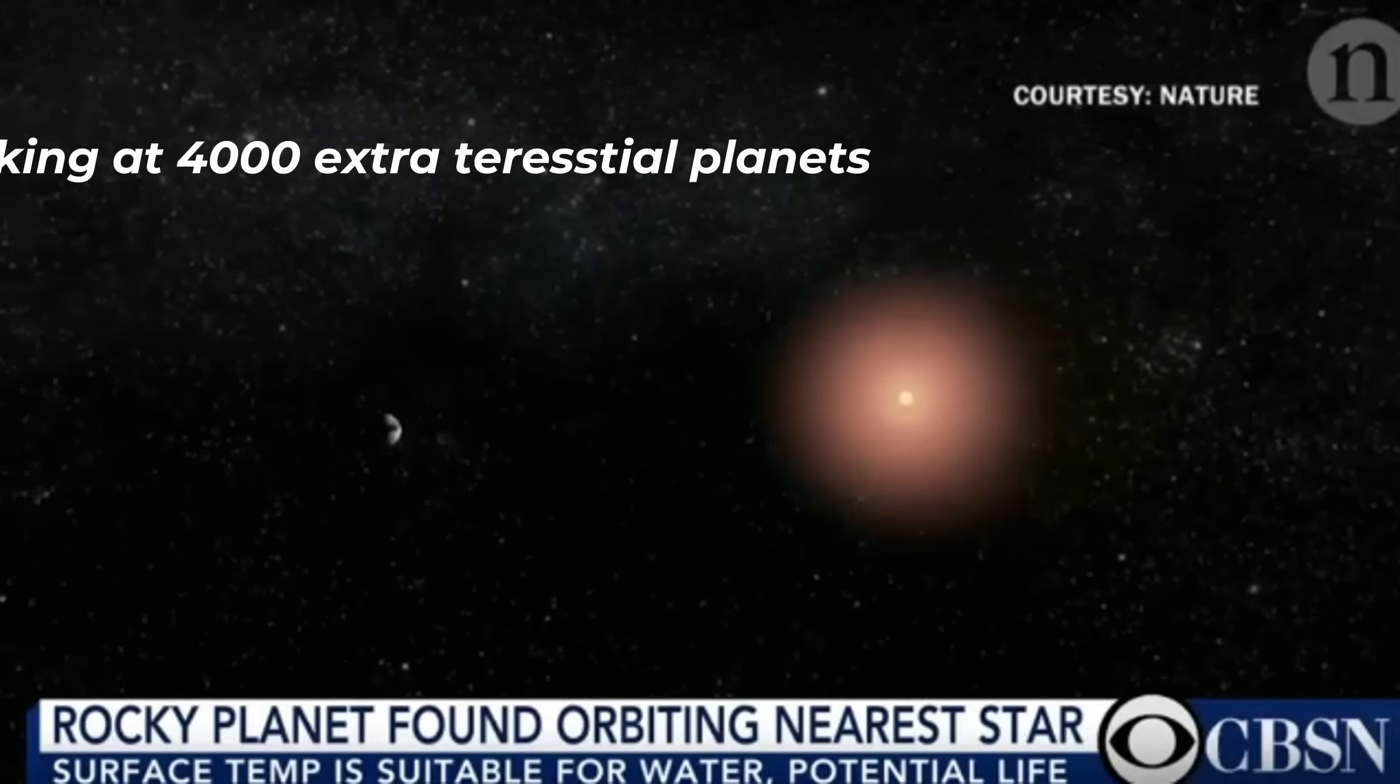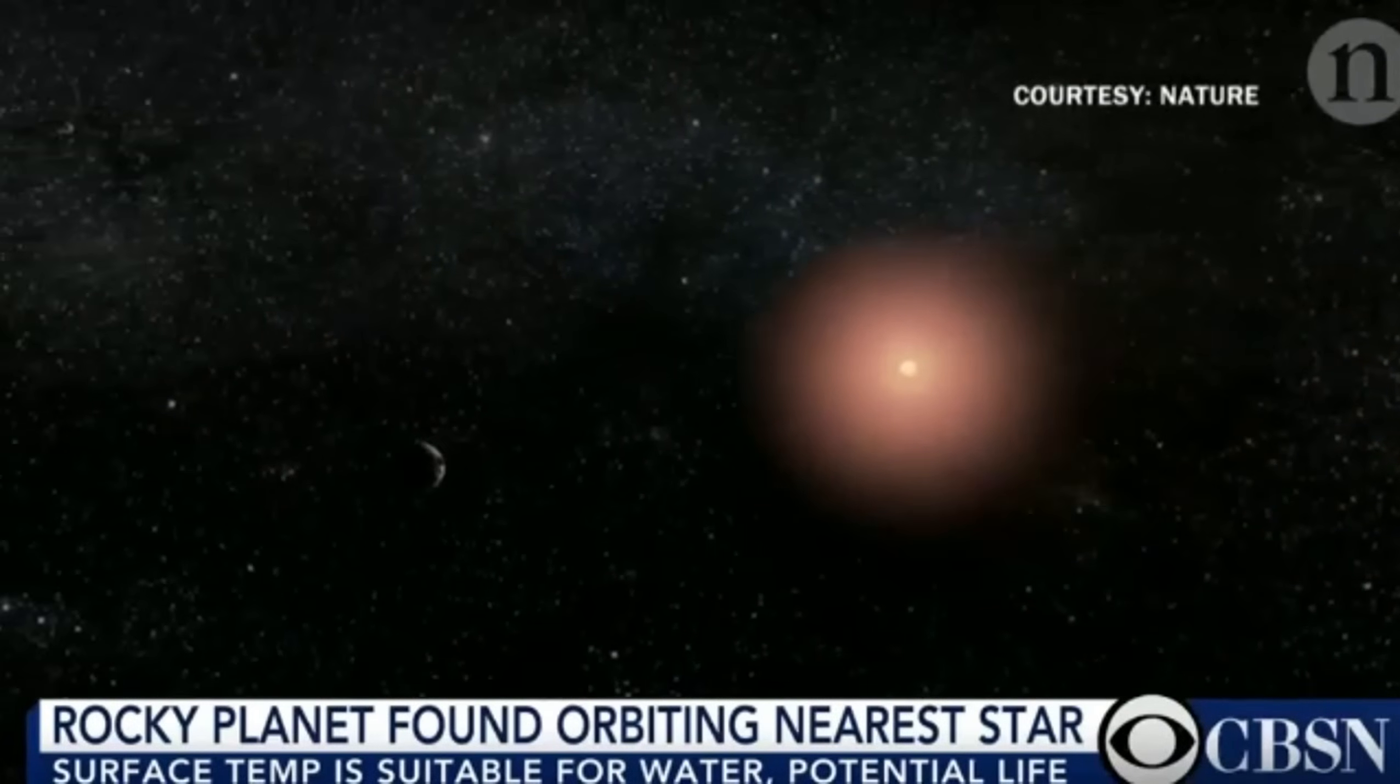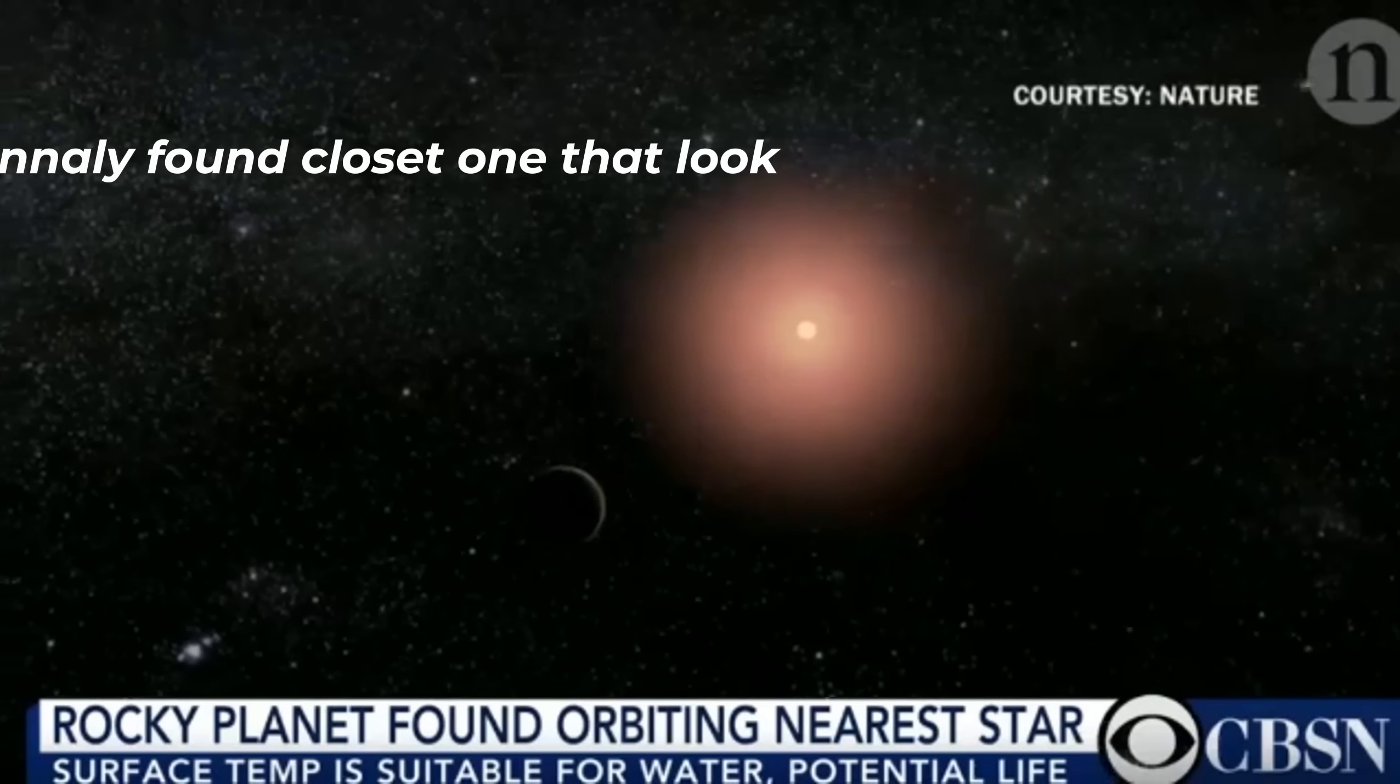After looking at 4,000 extrasolar planets, we finally found the closest one that looks very similar to planet Earth. And that is Proxima Centauri B.